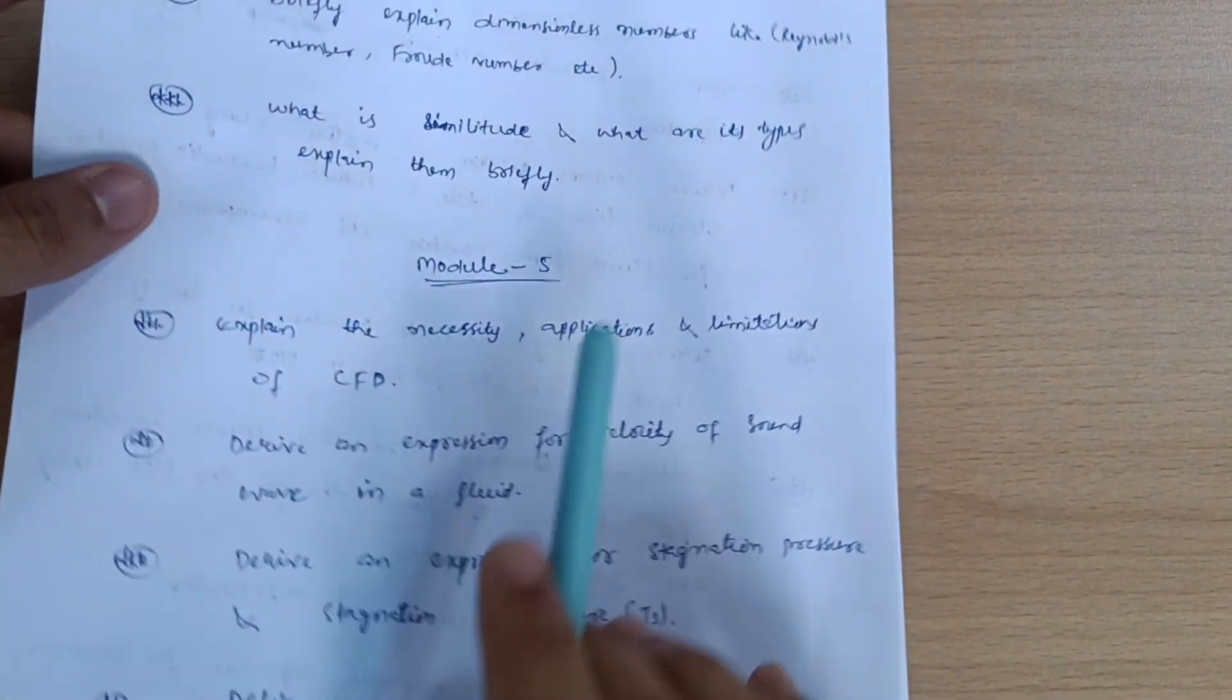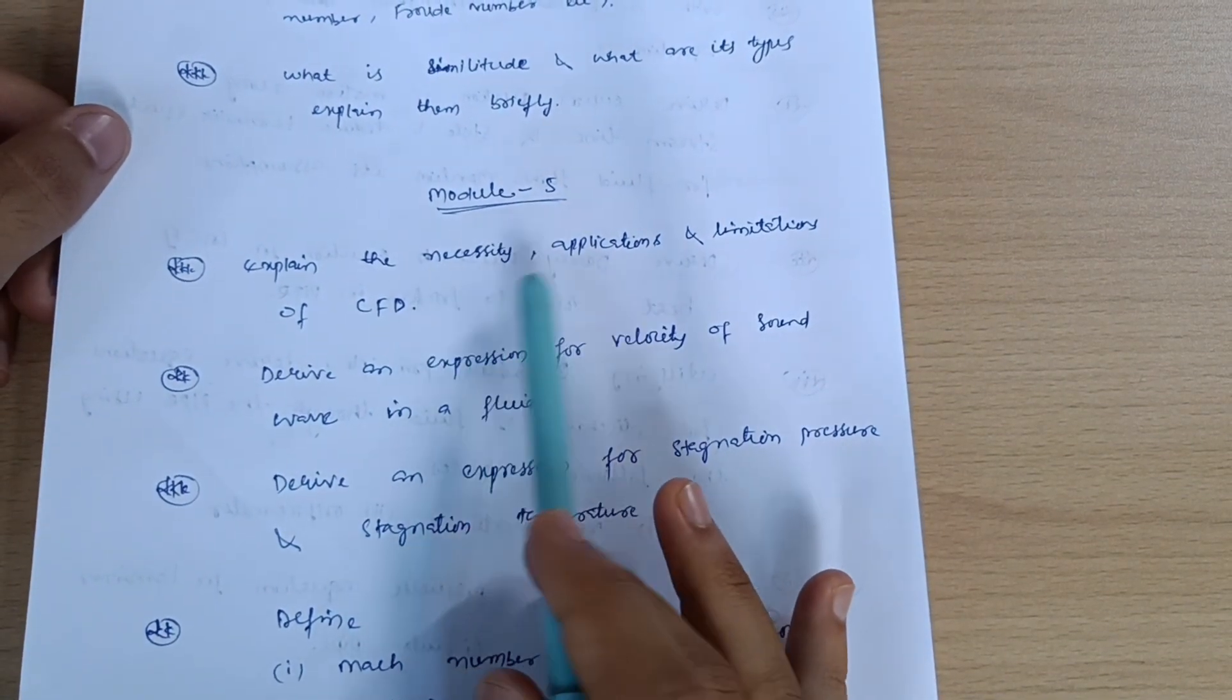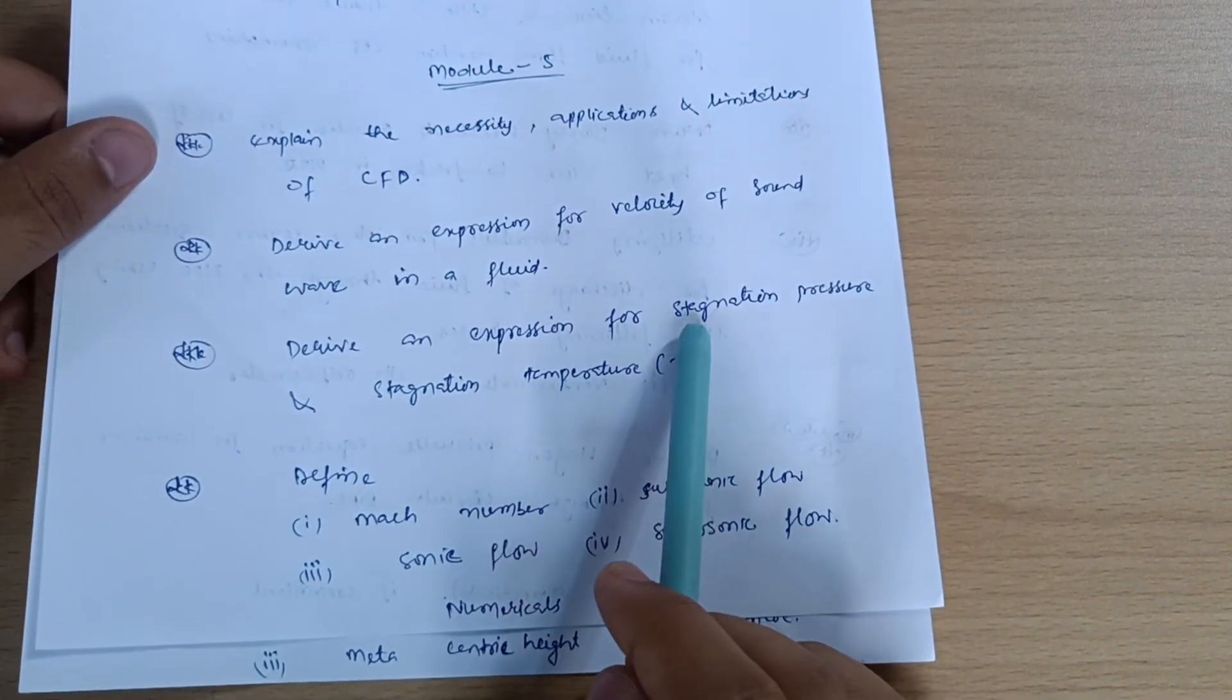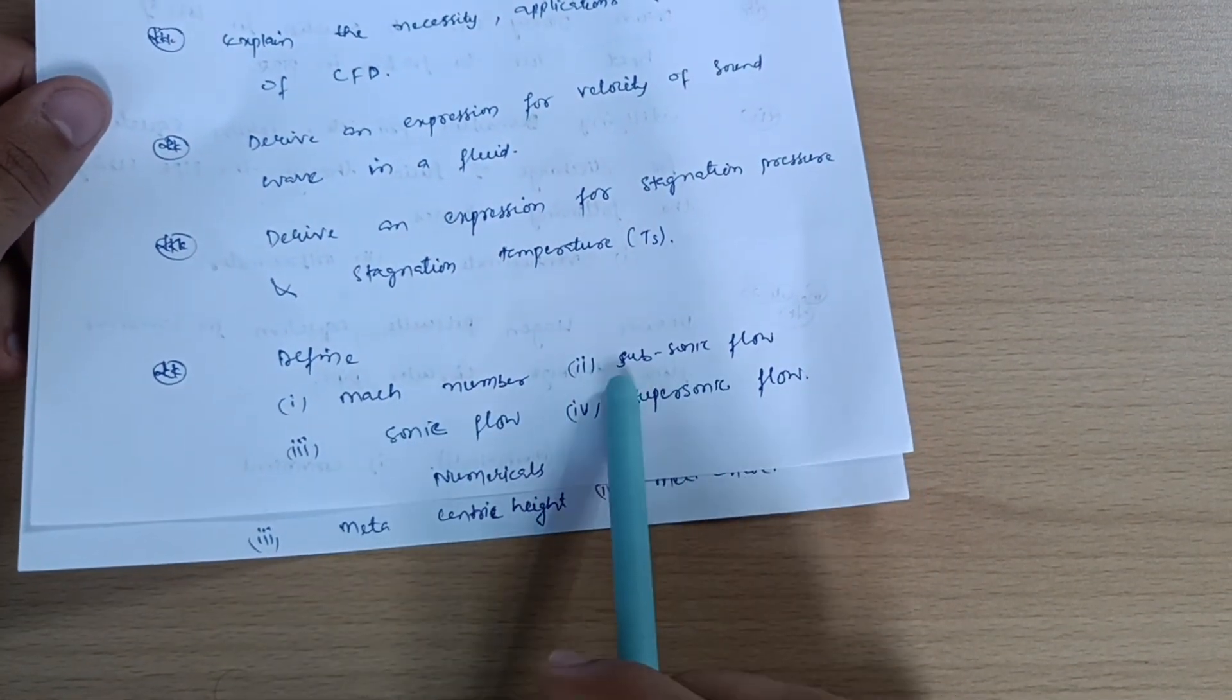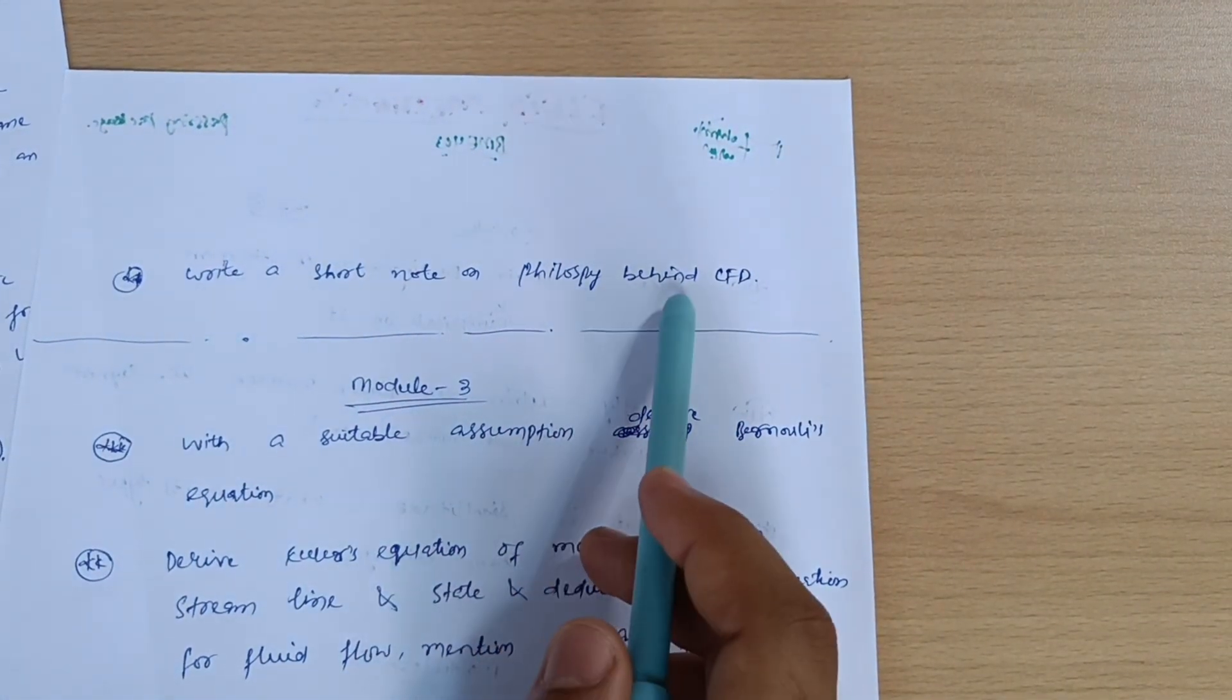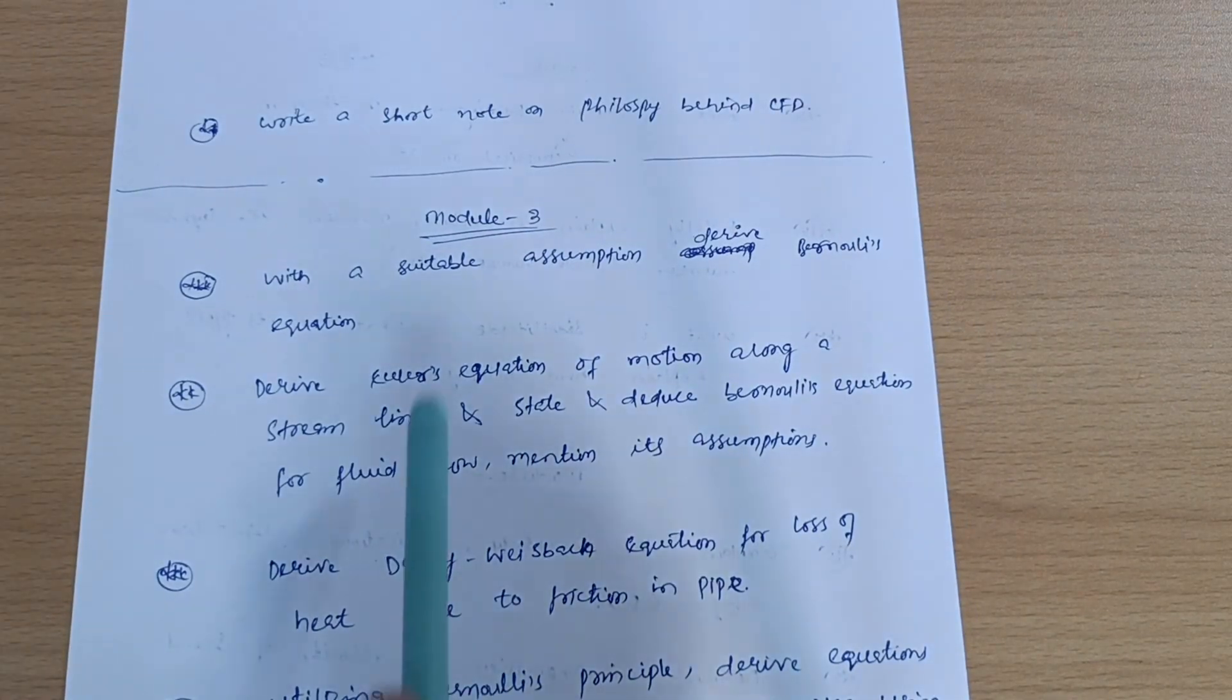Next is Module 5. Explain the necessity, applications, and limitations of CFD, and sometimes they will ask you philosophy behind CFD. Derive an expression for velocity of sound wave in a fluid. Derive an expression for stagnation pressure and stagnation temperature. Define the following: Mach number, subsonic flow, sonic flow, supersonic flow. Write a short note on philosophy behind CFD - Computational Fluid Dynamics. If you cover this much, you can easily score 15 marks.